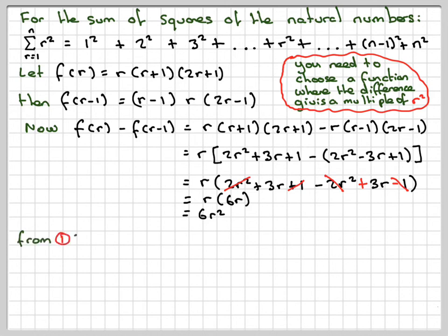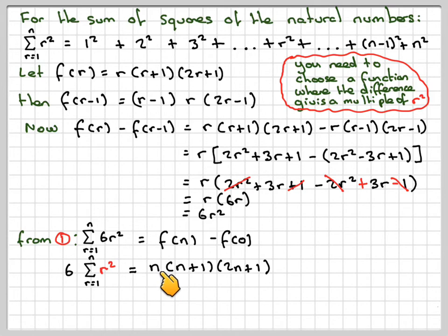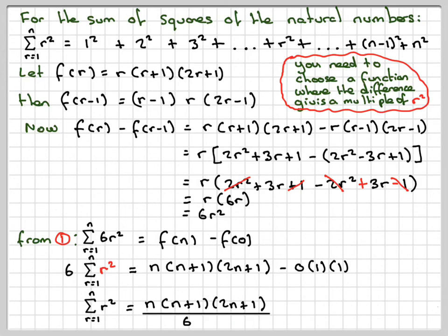From equation 1, the sum of 6r² — because that's our u_r — equals f(n) minus f(0). So 6 times the sum from r=1 to n of r² equals n(n+1)(2n+1). Putting 0 into our function gives 0 times 1 times 1, which is 0, so that disappears. We've got 6 times the sum of r², but we just want the sum of r², not 6r². So we divide by 6: the sum from r=1 to n of r² equals n(n+1)(2n+1) divided by 6. This result should actually be memorised.